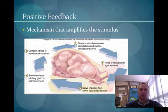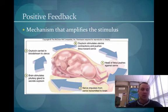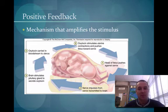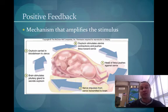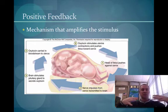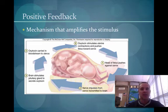The opposite of that is a positive feedback loop, which is a mechanism that amplifies the signal. The best example is childbirth. A woman's contractions increase the closer she gets to the actual birth, building up on top of one another. Looking at the diagram, the head of the fetus pushes against the cervix, nerve impulses transmit to the brain, the brain stimulates the pituitary gland to make oxytocin, oxytocin is carried into the bloodstream, and oxytocin stimulates the uterus to contract. The more the baby's head presses on the cervix, the more oxytocin is released — it gets bigger and bigger over time. That's positive feedback.